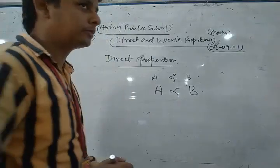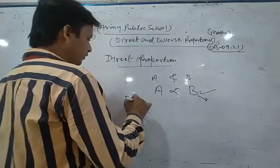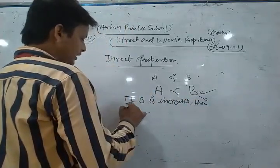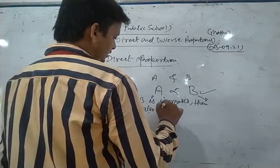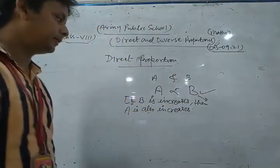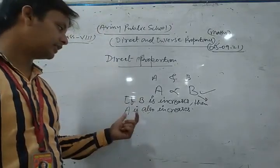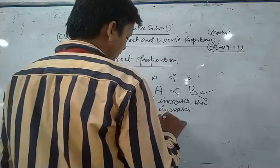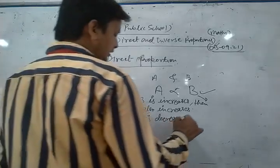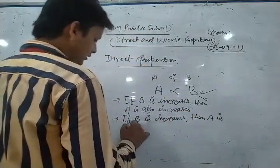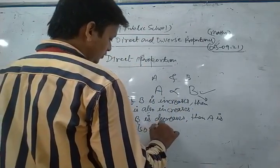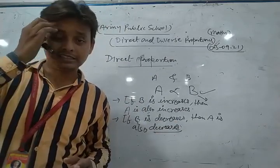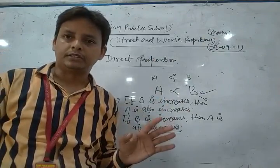In direct proportion, if b increases then a also increases, and if b decreases then a also decreases. This is the core concept of direct proportion — both quantities change in the same direction.